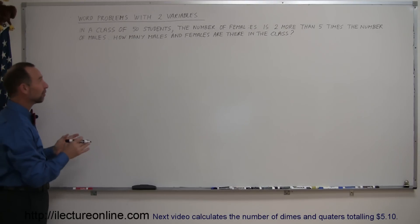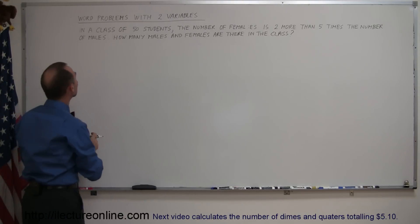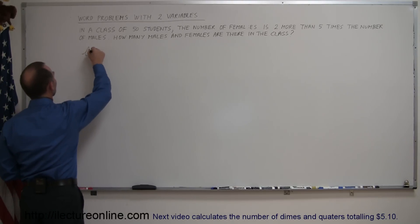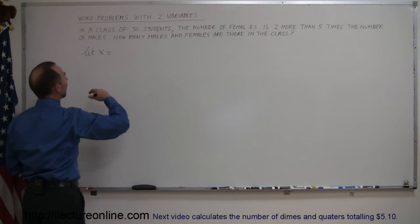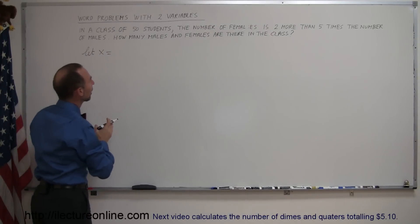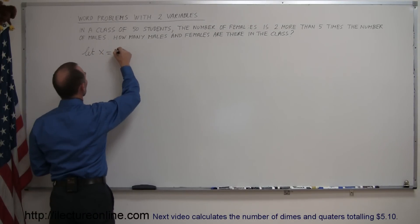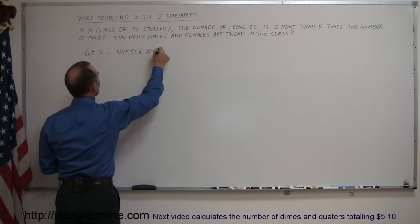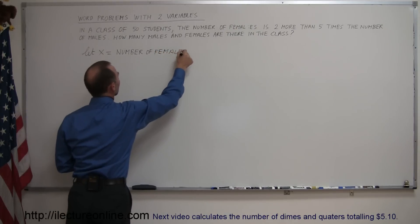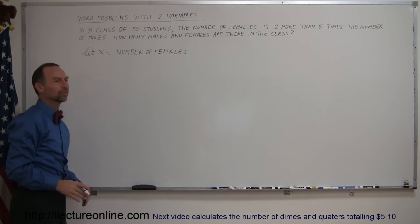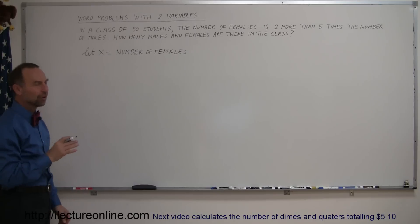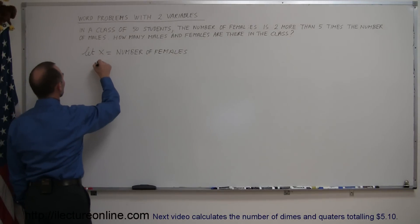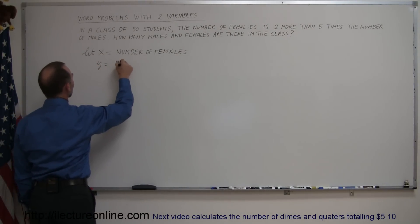Since we're going to use two variables, it's very important — imperative, actually — that you very carefully define the two variables. So write: let x equal the number of females. Students sometimes get lazy about this step, but it's very important. And let y equal the number of males.